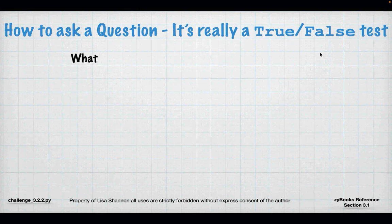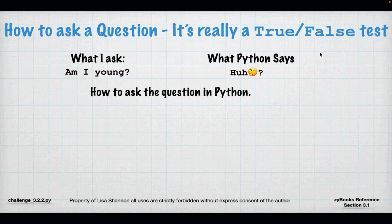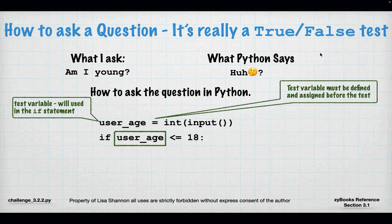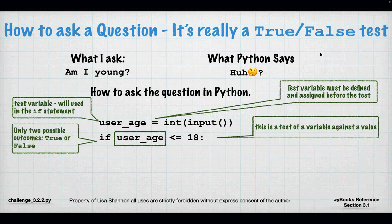How I ask a question is really a true-false test. If I ask 'am I young?' Python says 'huh.' Python doesn't understand what 'young' is — it doesn't understand what 'old' is. We have to give a very concrete definition. In my true-false test I'm going to define 'young' using the number 18: if I am less than or equal to 18, I am young; otherwise I'm old. UserAge less than or equal to 18 will evaluate to true or false depending on what userAge is.